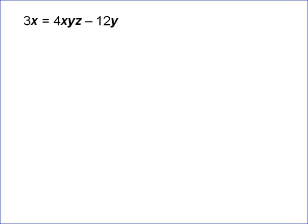On this problem you're asked to solve for z. In order to solve for z, you want to get the z by itself, or the term that has z in it, which is this term. I need to get rid of that negative 12y because we want to get the 4xyz by itself on that side of the equation. So we add 12y.